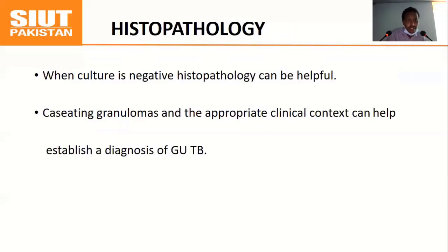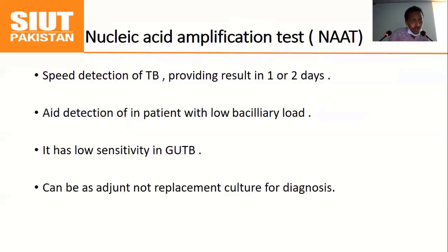When culture is negative, histopathology can be helpful. Caseating granuloma in an appropriate clinical context can help establish the diagnosis of genitourinary TB. Nucleic acid amplification tests allow rapid detection of TB, providing results within one to two days and detecting even patients with low bacillary load. However, it has low sensitivity in genitourinary TB and should be used as an adjunct — not a replacement — for culture, which remains the gold standard.